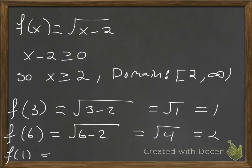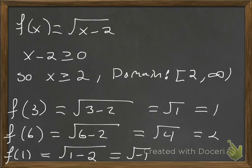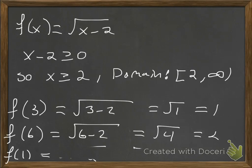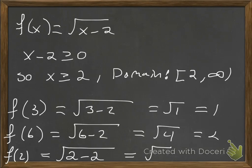If we try x equals 1, we get 1 minus 2, which is negative 1 under the square root — that's undefined, since 1 is not in the domain. So let's fix that by trying x equals 2 instead. Then we have 2 minus 2, which is the square root of 0, which equals 0. That one is perfectly fine.